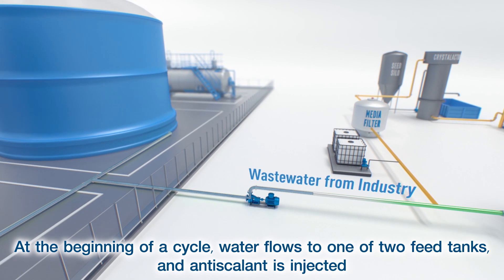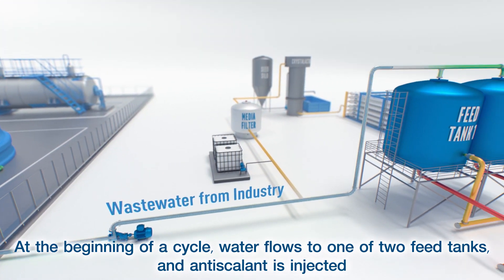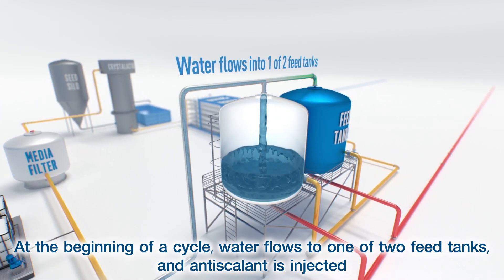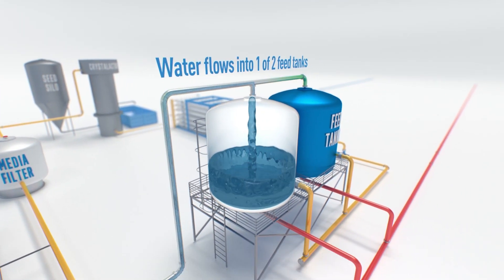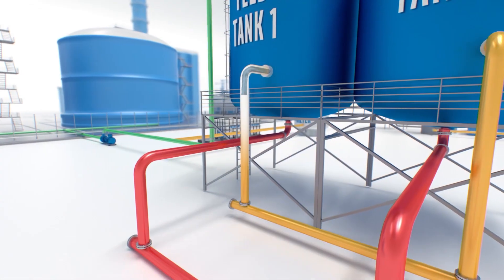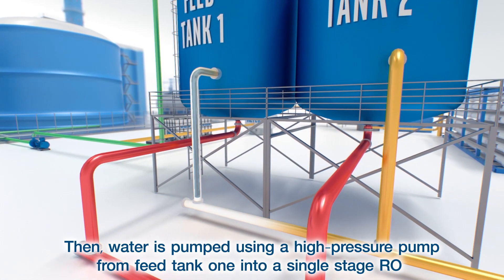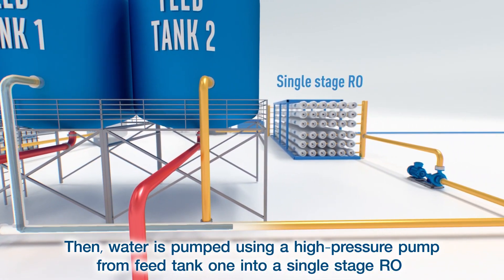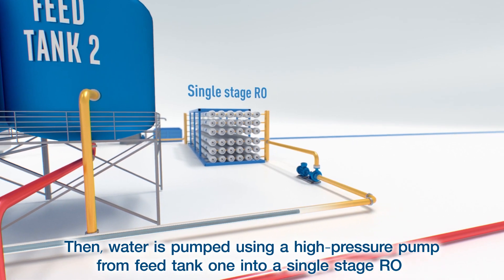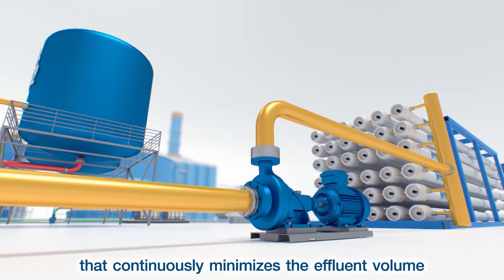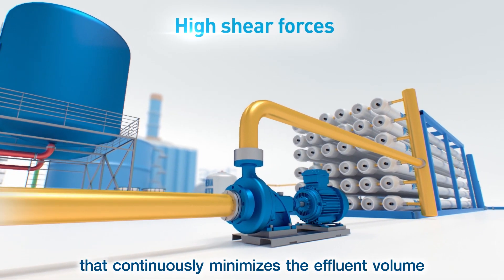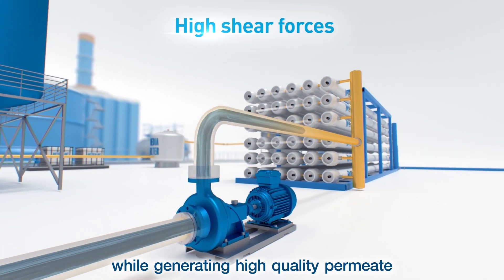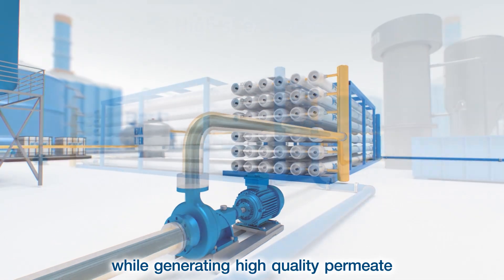At the beginning of a cycle, water flows to one of two feed tanks and anti-scalant is injected. Then water is pumped using a high-pressure pump from Feed Tank 1 into a single-stage RO that continuously minimizes the effluent volume while generating high-quality permeate.